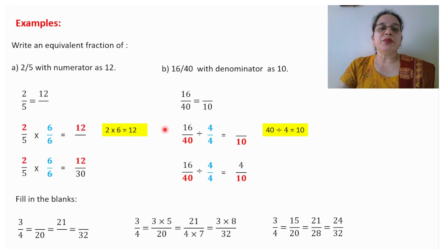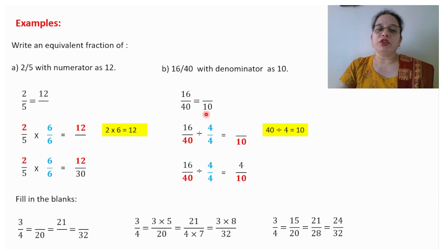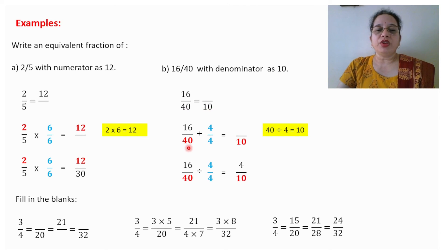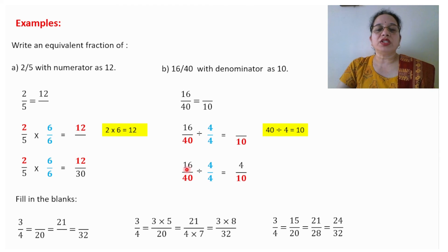Take another example: 16/40 with denominator 10. Write down 10 in place of the denominator and you need to find the numerator. The two numbers given are 40 and 10. What is the relation between 40 and 10? If we divide 40 by 4 we get 10. So here we divide by 4/4: 16 divided by 4 equals 4. Your answer is 4.